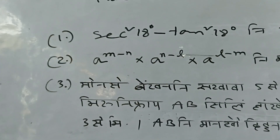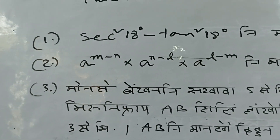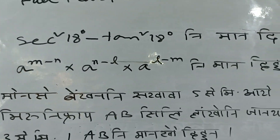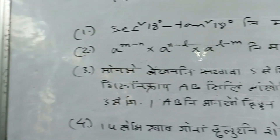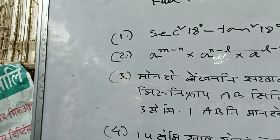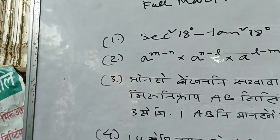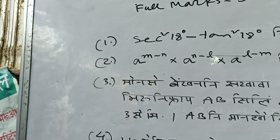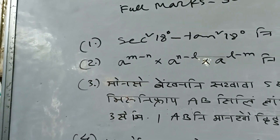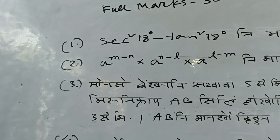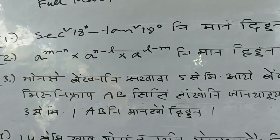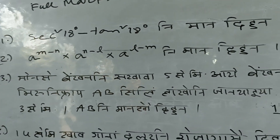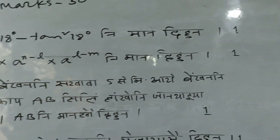Number one: 6 squared times 18 degrees minus 10 squared times 18 degrees. Number two: a to the power (m minus n), into a to the power (n minus l), into a to the power (l minus n).